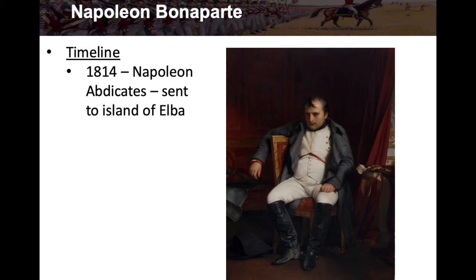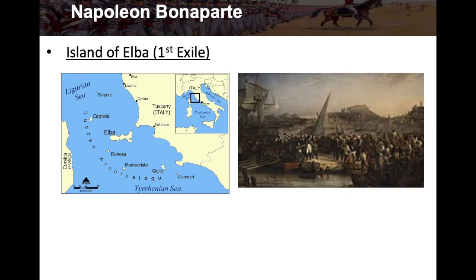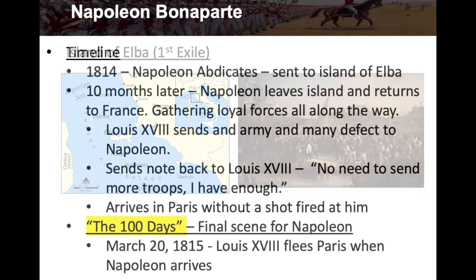He doesn't look so proud anymore sitting in that chair. The island of Elba was his first exile — you can see it on the map right off the coast of Italy. Here's Italy's boot, and Elba is this island right there. He's sent there in exile, but only for a short time.